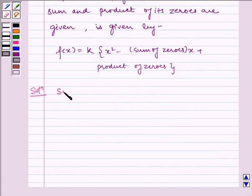Given to us is that sum of zeros equals 1/4 and product of zeros equals -1. Therefore, by the key idea, let us frame the polynomial.